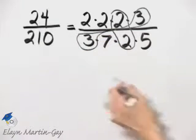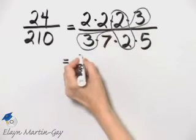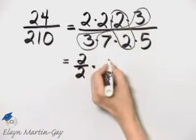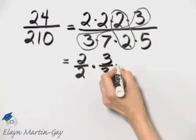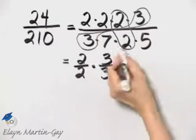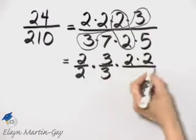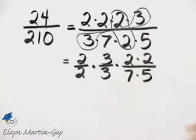Now I'm going to write this a little differently now. I'll write this as 2 over 2 times 3 over 3, and then we'll talk about why I'm writing this way, times, I have 2 times 2 left in the numerator and 7 times 5 left in the denominator.